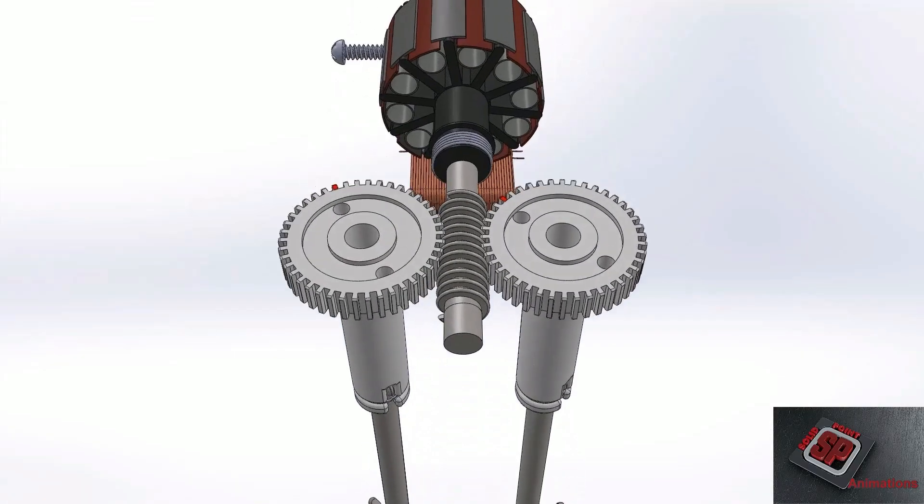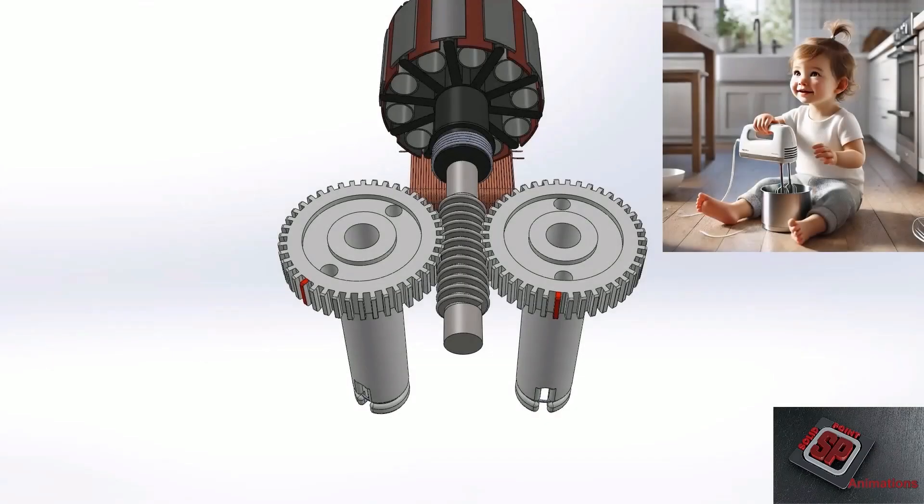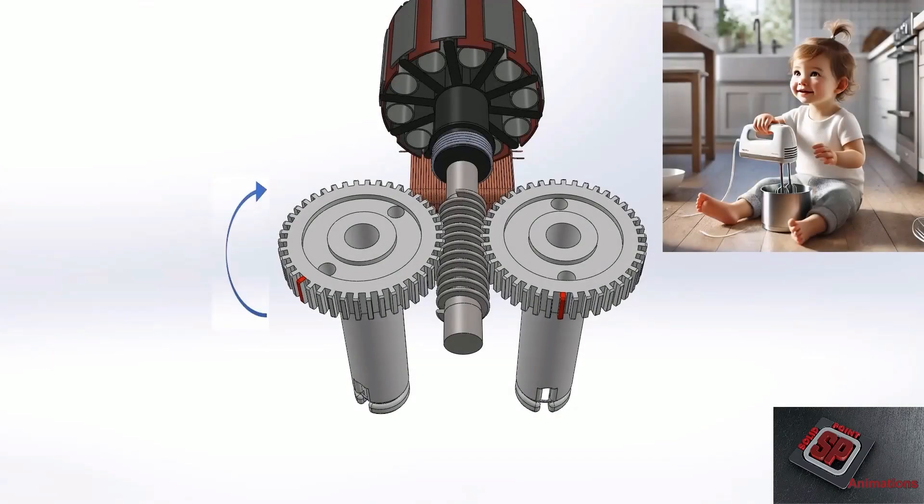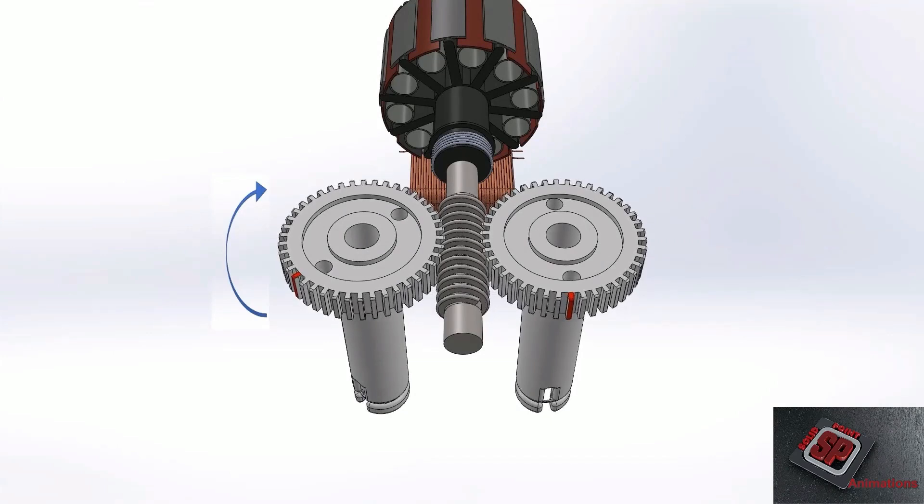The two beaters can spin very quickly while intermeshed without hitting and interrupting each other. And they have a built-in safety mechanism so little kids or pets do not hurt themselves while spinning the beaters manually.